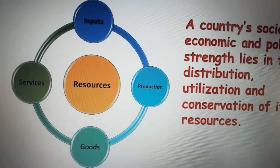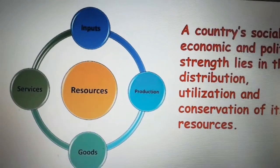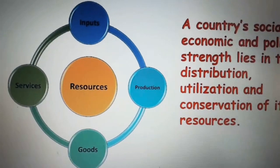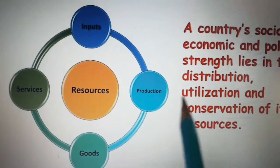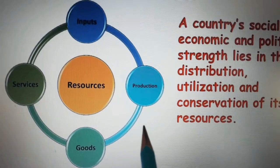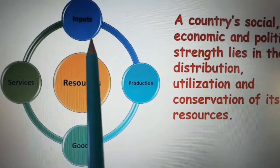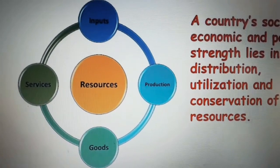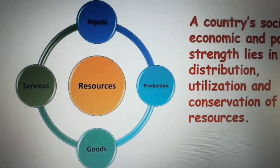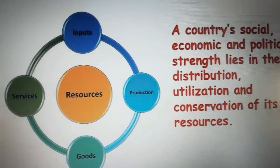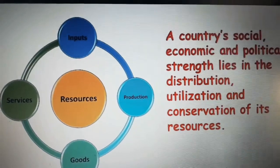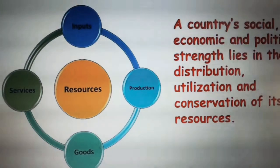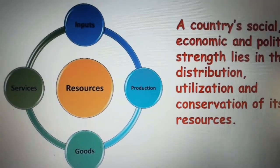For example, if you want to start a textile business, you need clothes material — like jute or cotton — and that is the resource. Once you give the input, you get production and goods, you can sell them and earn money. So the country's economic level goes up. The distribution, utilization, and conservation of resources is everything for a country's economic level.